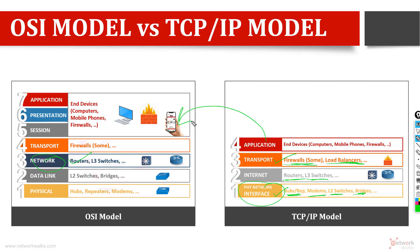The transport layer covers firewalls, load balancers in the TCP/IP model. The application layer covers end devices which include computers, mobile phones, firewalls, and printers. This is the major difference between the OSI model and the TCP/IP model.